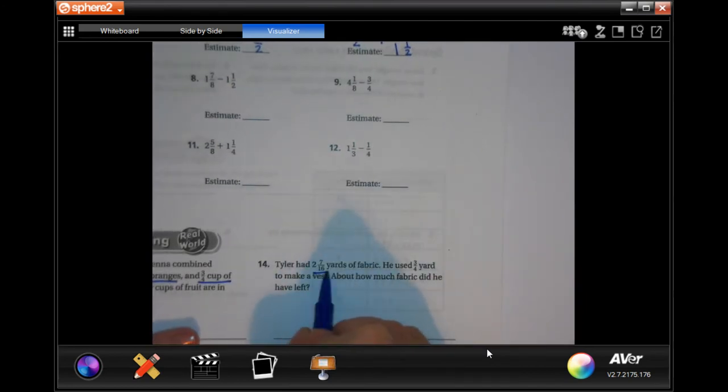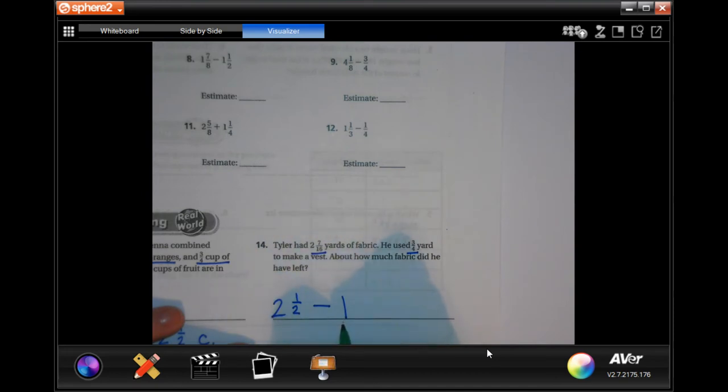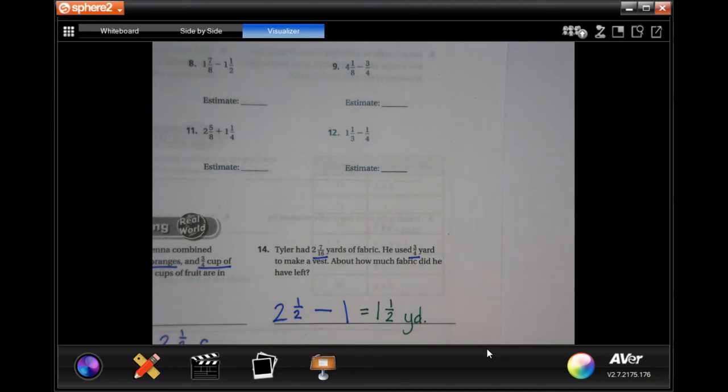Tyler had 2 and 7/16 yards of fabric. He used 3/4 of a yard to make a vest. About how much fabric does he have left? So 2 and 7/16 is about 2 and a half. Minus 3/4 is about 1. Because I'm only subtracting those whole numbers, 2 minus 1 is 1, and then I can keep my half. Make sure we put yard.